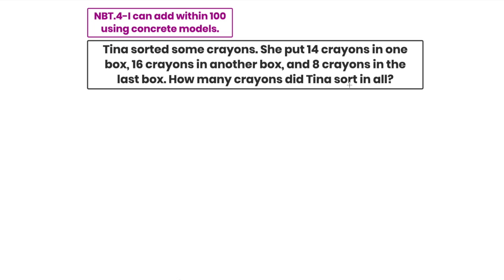Once again, I need to look at the question: How many crayons did Tina sort in all? I see 'in all,' so I know I'm going to add something. Let me look back at the amounts. First, she put 14 crayons in a box — I'm going to circle 14. Then she put 16 crayons in another box — I'll circle 16. Last, she put eight crayons in the last box — I'm going to circle eight. Since 'in all' gives a hint to add, I'll set up my equation: 14 plus 16 plus 8.